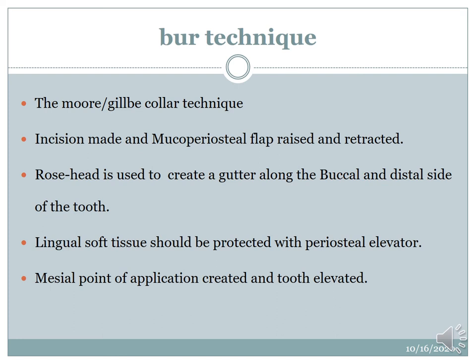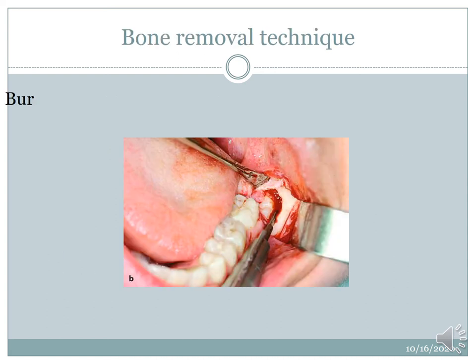The burr technique is called the Moore or Kala technique. The flap is raised. A rosette burr is used to create a gutter in bone on the buccal aspect, or a straight fissure burr is used to gutter the distal aspect of the tooth. Lingual soft tissue should be protected with a periosteal elevator to avoid injury to the lingual nerve. The initial point of application is created and the tooth is elevated. This picture shows how bone guttering has been done — you can clearly see a gutter formed around the impacted tooth.